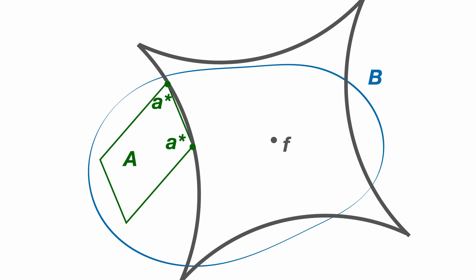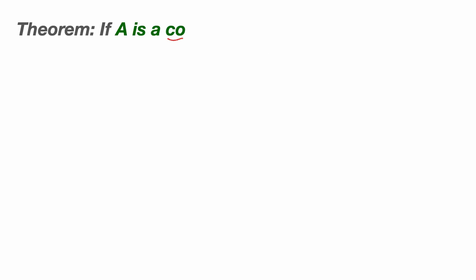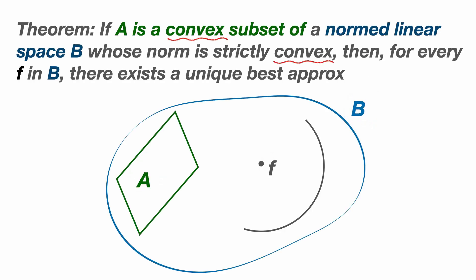We're now ready to write down a uniqueness theorem for best approximations. If capital A is a convex subset of a normed linear space capital B whose norm is strictly convex, then for every F in capital B there exists a unique best approximation A star in capital A to F. If a set is strictly convex the line connecting any two points is entirely in the interior of the set, not on the boundary, and that LP norms for P greater than one are strictly convex.